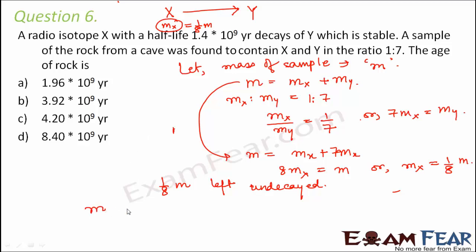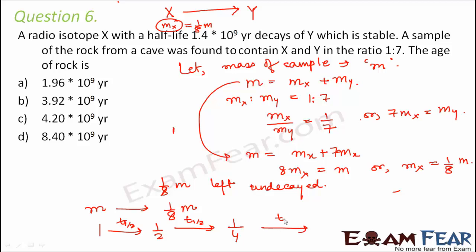So the question becomes: how much time does it take to go from m to m/8? That time is the age of the rock, because currently 1/8 of m is undecayed and the initial amount was m. Using half-lives: after 1 half-life → m/2; after 2 half-lives → m/4; after 3 half-lives → m/8. So we need 3 half-lives to go from m to m/8.